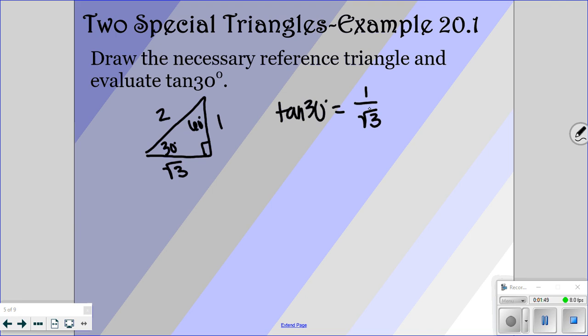And then if you rationalize it, you would multiply by the square root of 3 in your numerator and your denominator. And so that should give you the square root of 3 over 3. So that would be your answer for tangent of 30.